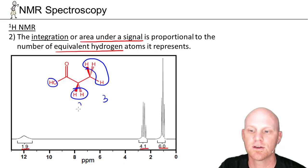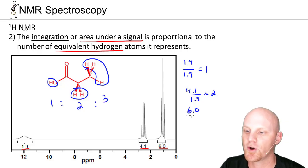We can see that these are in a 3 to 2 to 1 ratio. This 6.0 to 4.1 to 1.9 ratio, if we want to turn that into a whole number ratio, we divide all these by the lowest number. We divide 1.9 over 1.9 and get 1, we take 4.1 over 1.9 and get approximately 2, and we take 6.0 over 1.9 and get approximately 3.